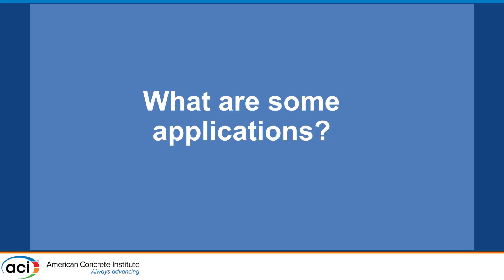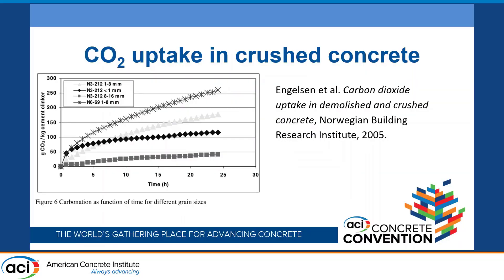What are some applications of this technique? This example from the Norwegian Building Research Institute in 2005: they demolished and crushed concrete and put it in a treatment process, with different size fractions, treatment times, and amount of CO2 on the vertical axis — a pretty detailed curve with 25 or 30 data points. If I were doing this with TGA, I'd spend 90 minutes to two hours for one data point. All I want to know is how much CO2 absorbed, and I can get that result from this carbon analyzer in a minute, making it quite easy to generate the data for a study like this.